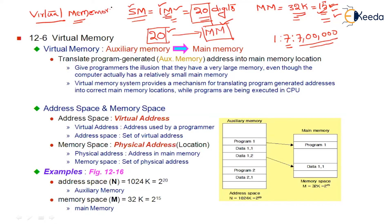In virtual memory, the programmer has been given an illusion that the total secondary memory is available to him, so he uses 20-digit addresses. When he constructs addresses using 20 digits, finally these 20-digit addresses have to be located in main memory, which just supports 15 digits. So the programmer's 20-digit address has to be translated to the 15-digit physical address that is actually available in main memory. This process is called virtual memory.